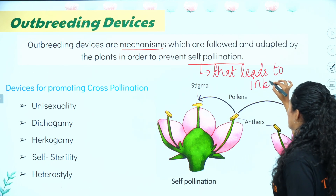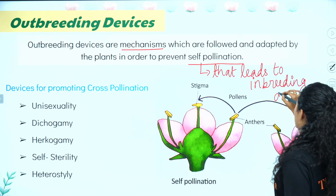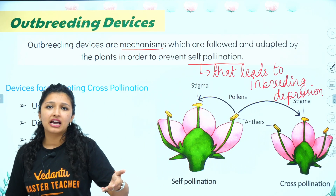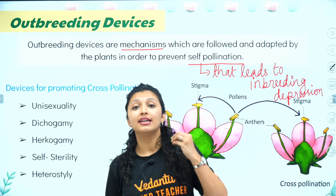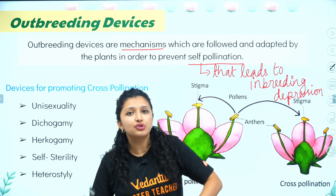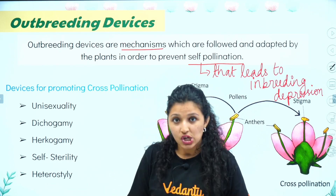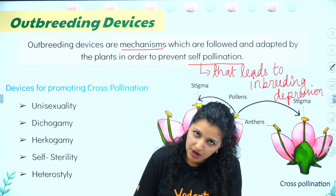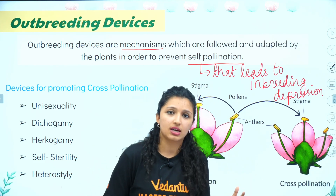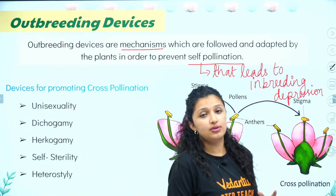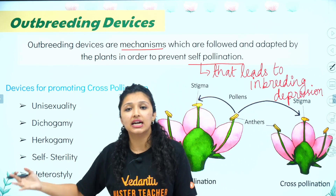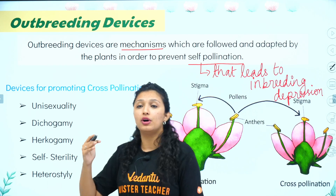Inbreeding depression occurs because continuous reproduction with the same genetic makeup means you cannot produce variation. So if there is an environmental shift, they won't be able to survive. Variation gives new super powers — they will be resistant. That is why we do sexual reproduction, because without it there is no evolution.